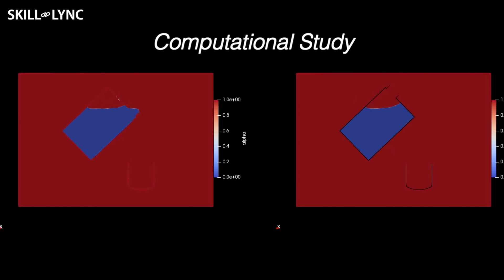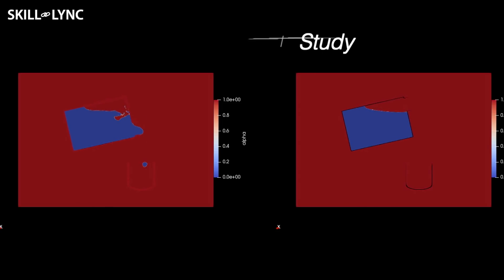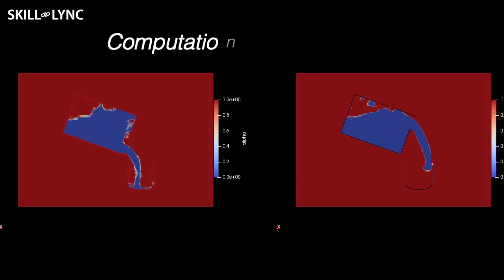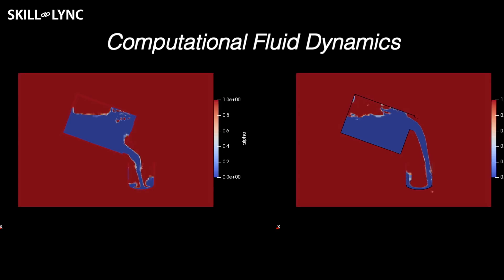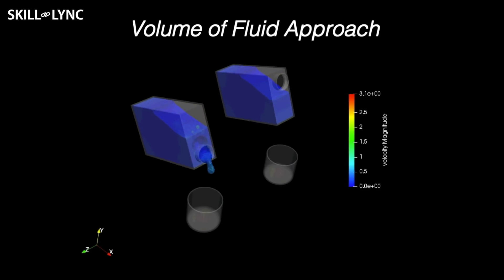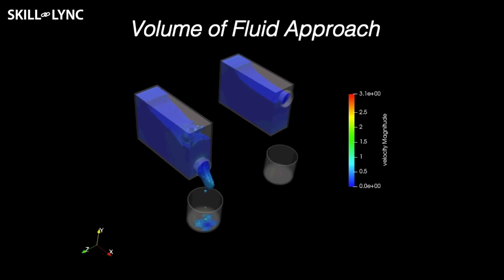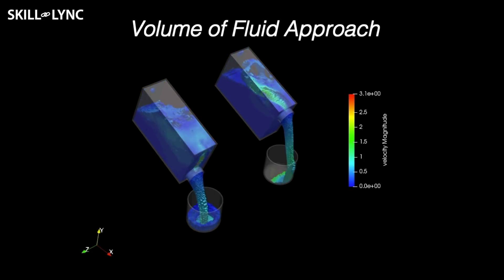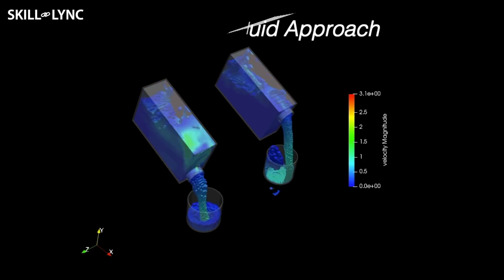In order to investigate further, we decided to do a computational study. We first used CAD to build simplified models of the juice box, and then we used computational fluid dynamics to set up the simulation. In this case we have two phases involved — air and juice — so we are going to be using the volume of fluid methodology to track the interface.